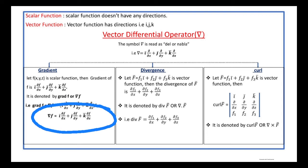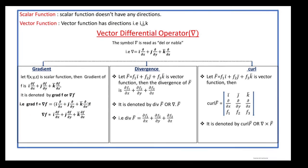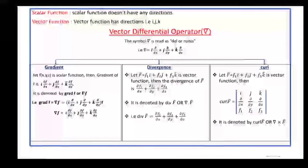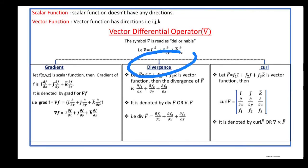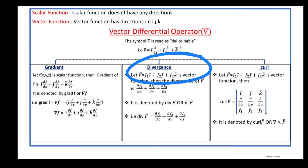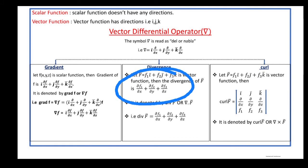Next, divergence. Let f-bar = f1·i-bar plus f2·j-bar plus f3·k-bar be a vector function. The divergence of f-bar is: ∂f1/∂x plus ∂f2/∂y plus ∂f3/∂z.